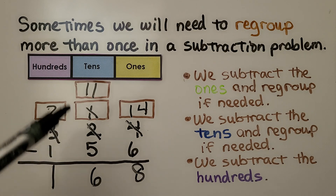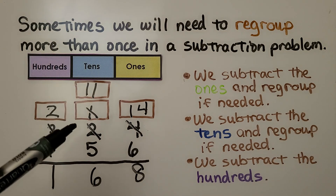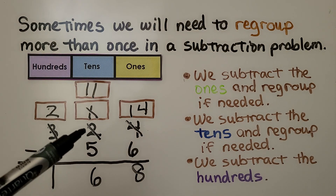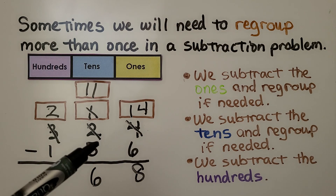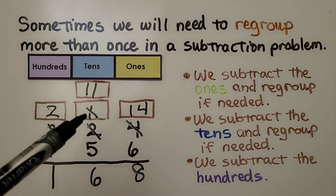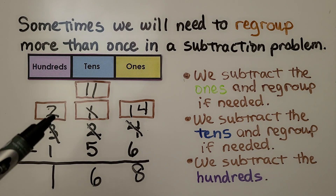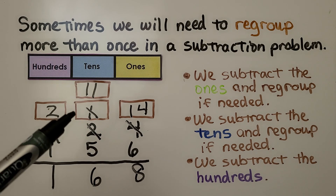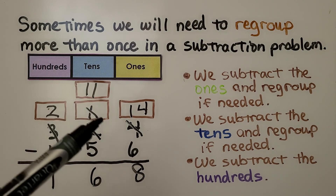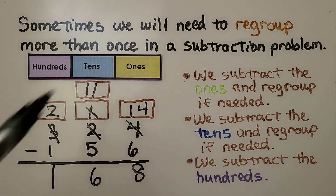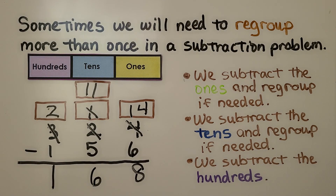So if you notice there were two boxes here, because we needed to regroup — we crossed this one off and it became a one ten. Then, to subtract, we needed to regroup again, and instead of one ten, now we have eleven tens, and the eleven went up there.